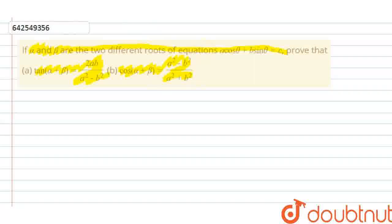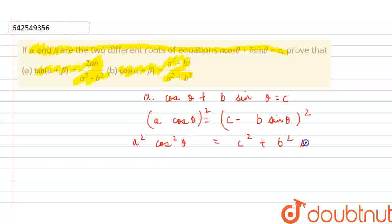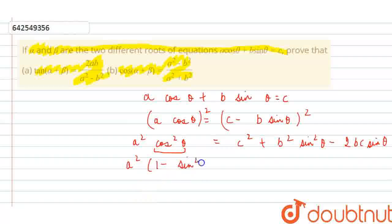Considering the given equation a·cosθ + b·sinθ = c, I rearrange to a·cosθ = c − b·sinθ, then square both sides. This gives a²·cos²θ = c² + b²·sin²θ − 2bc·sinθ. I then write cos²θ as 1 − sin²θ, derived from the basic identity sin²θ + cos²θ = 1.